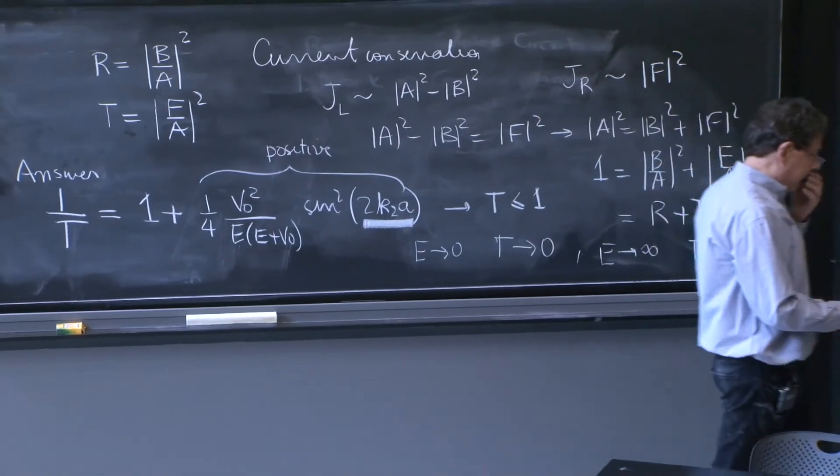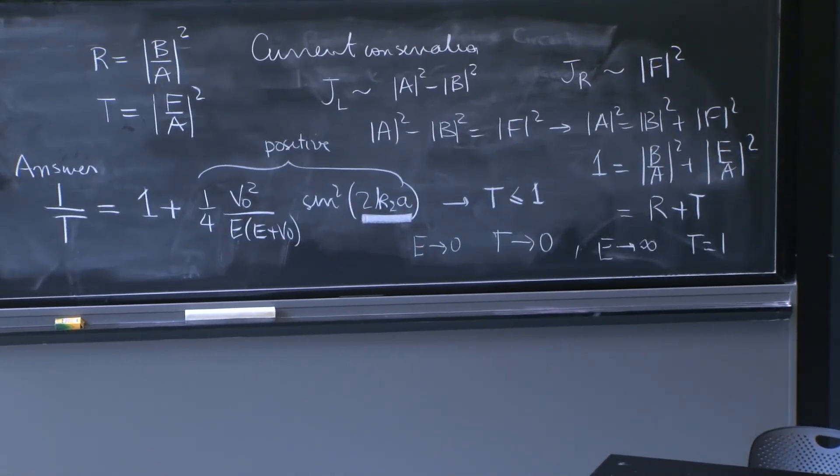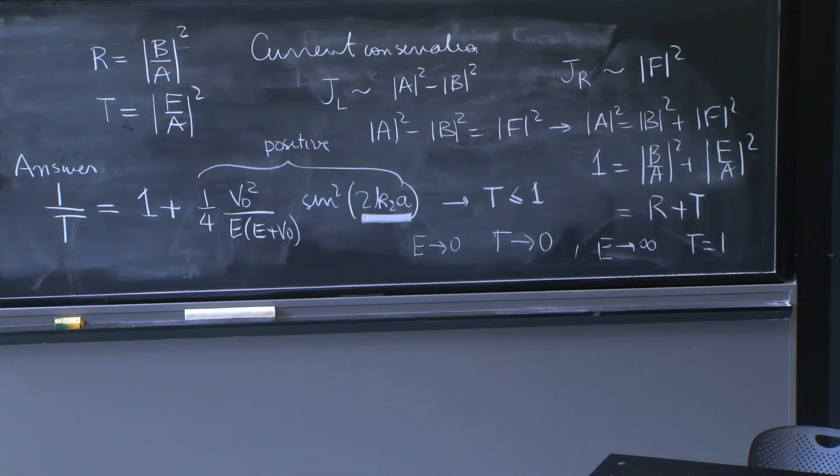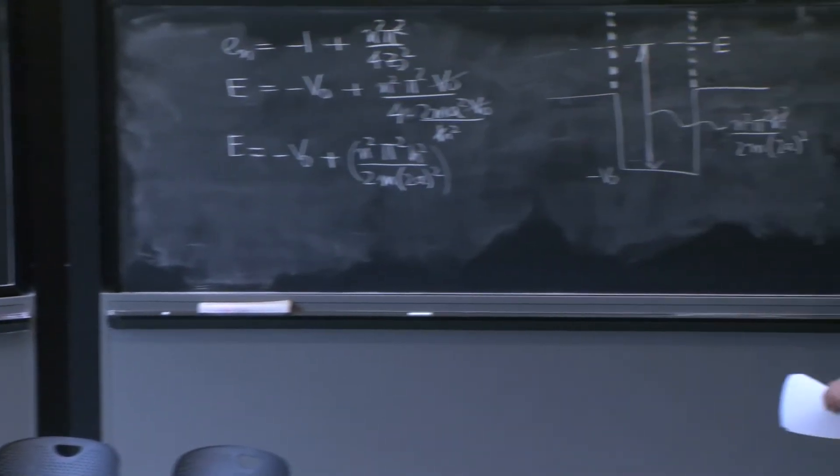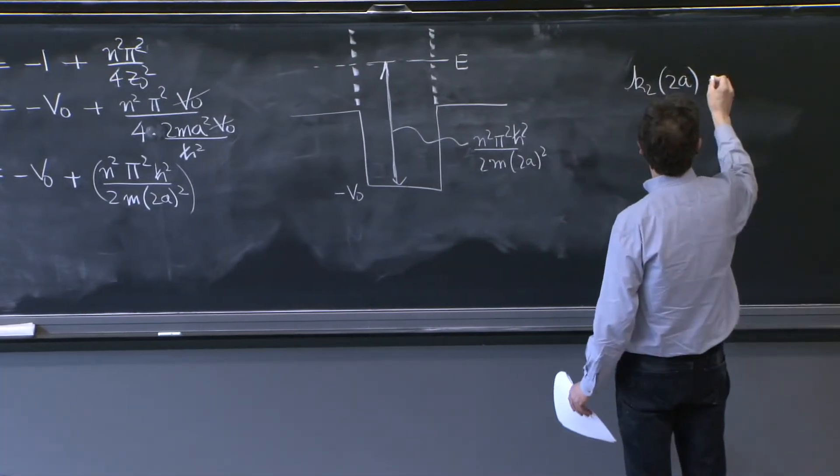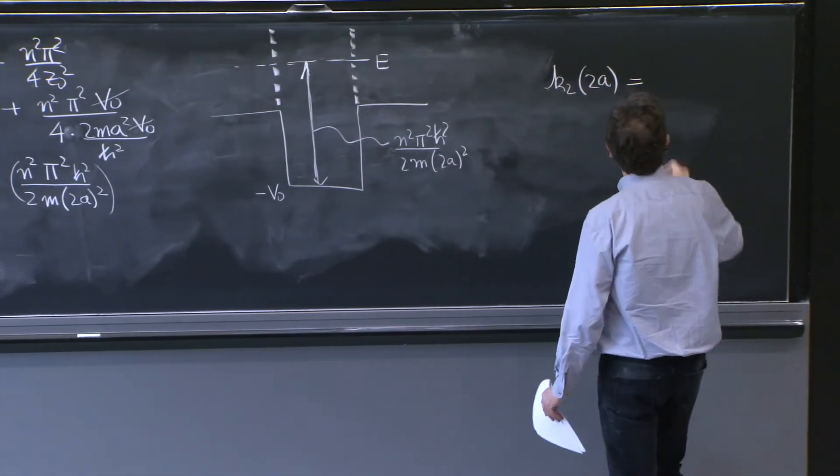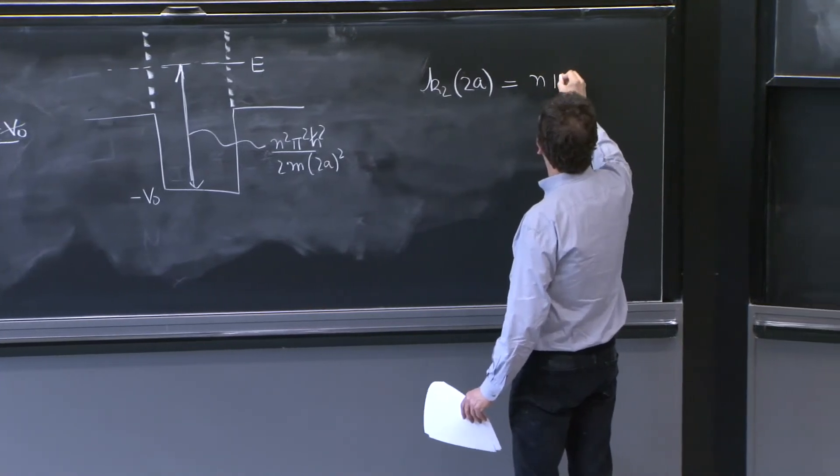so what do we have? The condition was that k2 times 2a, the argument of the sine function, would be a multiple of pi.